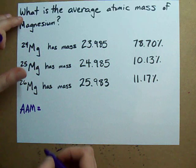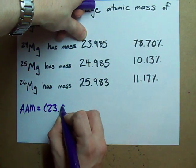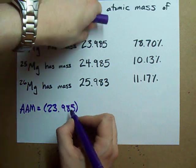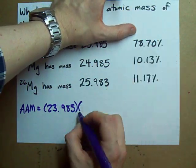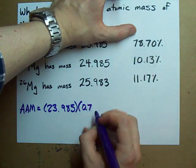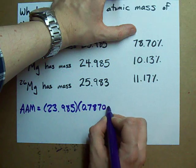is multiply each of the masses, for example 23.985, by each of the isotopic abundances. Make sure you write your percentages as decimals, 78.7% being .7870.